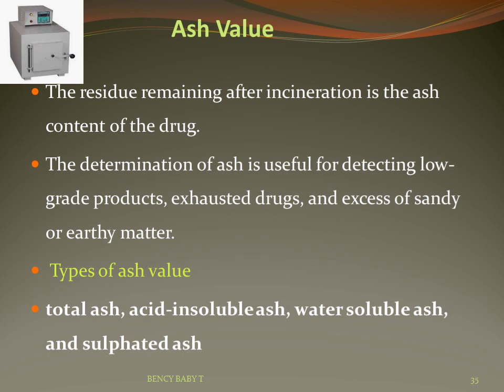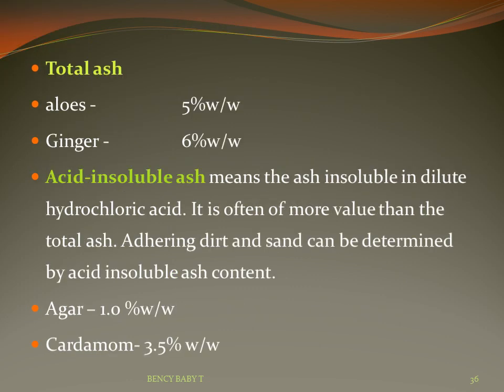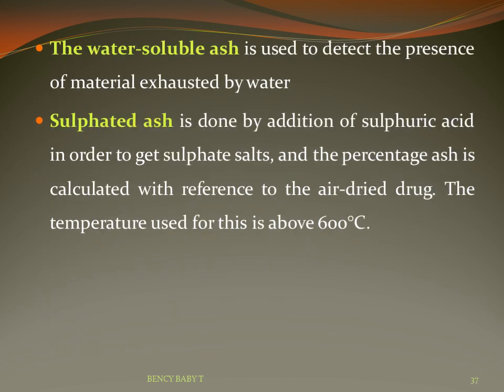Ash value: the residue remaining after incineration is the ash content of the drug. Determination of ash is useful for detecting low-grade products, exhausted drugs, and excess sandy or earthy matter. Types of ash value include total ash, acid-insoluble ash, water-soluble ash, and sulfated ash. Total ash is the residue after incineration. Acid-insoluble ash is the portion insoluble in dilute hydrochloric acid. Total ash of aloe is 5% w/w, ginger is 6% w/w. Acid-insoluble ash: agar not more than 1% w/w, cardamom 3.5% w/w. Water-soluble ash detects material exhausted by water. Sulfated ash is obtained by adding sulfuric acid to get sulfated salt. The percentage of ash is calculated with reference to air-dried drug, at a temperature above 600°C.